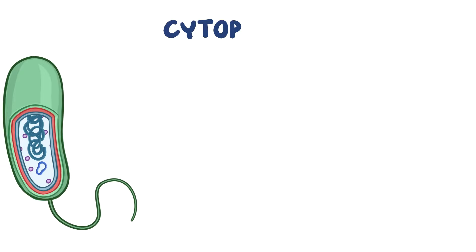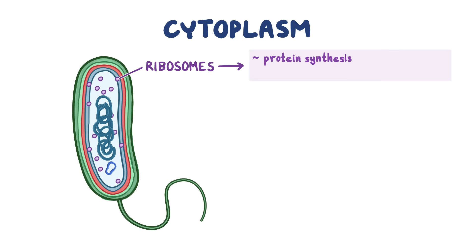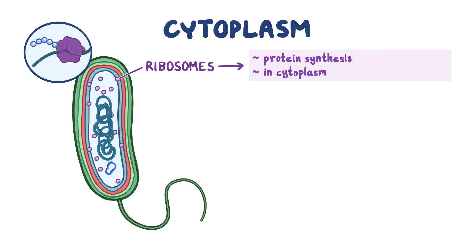In the bacterial cytoplasm, there are scattered cell components such as ribosomes, which are the sites of protein synthesis. These ribosomes can be found spread all over the cytoplasm, where they produce proteins that are destined to remain inside the cell, or they can be attached to the plasma membrane — called plasma membrane-associated ribosomes — and in this case they make proteins that will reside in the cell envelope or get transported outside the cell.